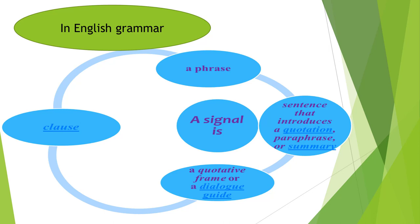In English grammar, a signal phrase is a phrase, clause, or sentence that introduces a quotation, paraphrase, or summary. It is also called a dialogue guide. A signal phrase includes a verb, such as said or wrote, along with the name of the person who is being quoted. Although a signal phrase most often appears before a quotation, the phrase may instead come after it or in the middle of it. Style guides generally advise writers to vary the positions of signal phrases to improve readability throughout a text.